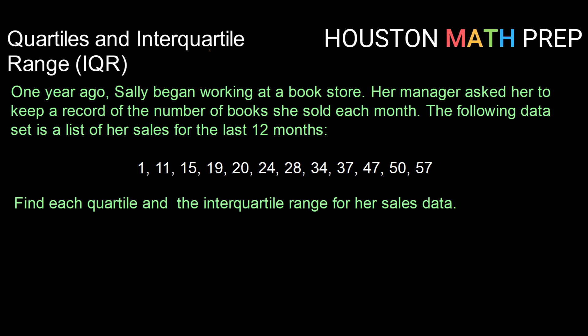So here's our setup. One year ago, Sally began working at a bookstore. Her manager asked her to keep a record of the number of books she sold each month. The following data set is a list of her sales for the last 12 months. So we have 12 data values here. Notice they are in order already. In order to find quartiles, your data needs to be in order. So if you encounter a data set that is not, go ahead and start by putting it in order.